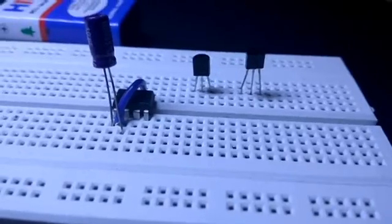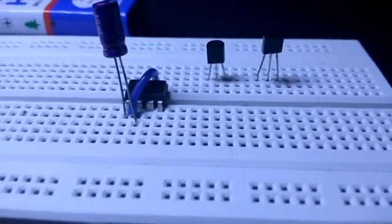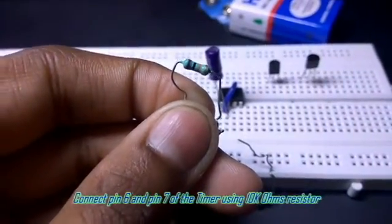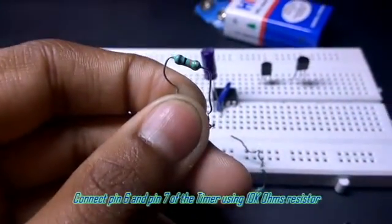Now using a 10k resistor connect pin 6 and pin 7 of the 555 timer.